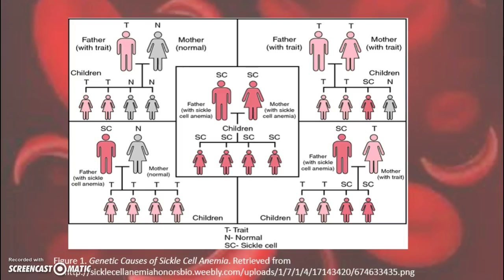Figure 1 shows that if one parent has the sickle cell trait, there is a 50% chance a child could be born with the inherited trait. If both parents have the trait, there is a 50% chance a child could inherit the trait, a 25% chance the child will not inherit the trait, and a 25% chance the child will be born with sickle cell anemia.